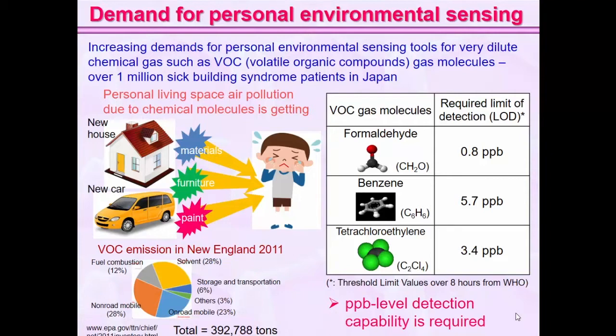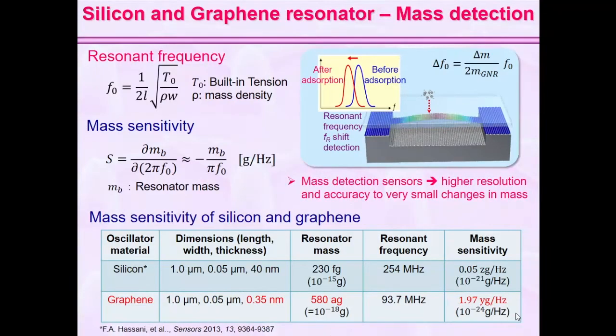This is a brief chart of VOC emissions from New England in the US. Around 392 thousand tons of VOC gas were emitted in 2011 alone. So we need to sense very low-level concentrations of these gas molecules. One of the methods to sense this is the resonator mass detection method, because it has high resolution and accuracy for very small changes in mass.